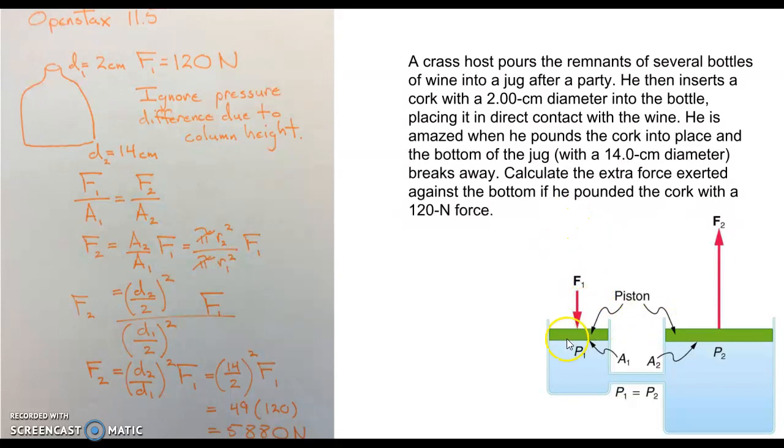So, as I said, this problem is about Pascal's Principle, which states the pressure is constant, no matter what the shape of the container, if you are at the same horizontal level. And, honestly, we are ignoring the pressure due to the column height of fluid above the bottom of the jug compared to the top of the jug.